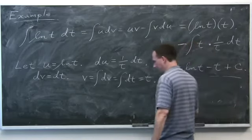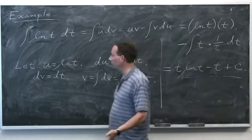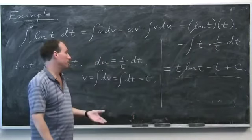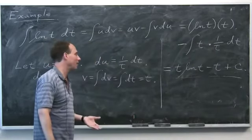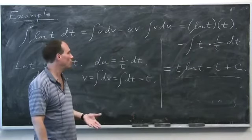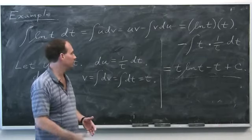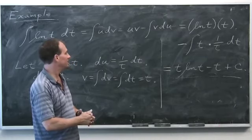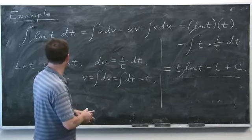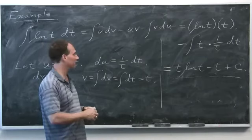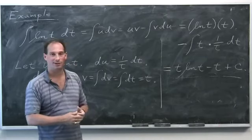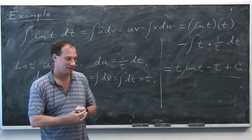The anti-derivative of ln(t) is t ln(t) minus t plus c. You can memorize that if you want, though it doesn't come up terribly often. It's nice to know it's known.